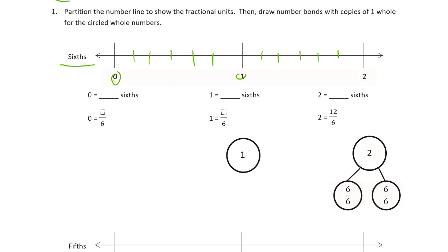All right, so then draw a number bond. So 0 is 0 sixths. And I could label this number line like that, just labeled all the sixths that I marked out.